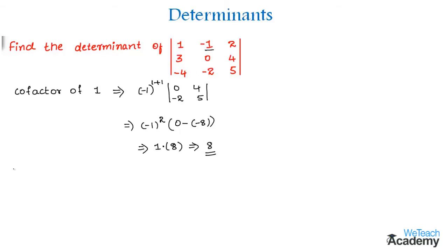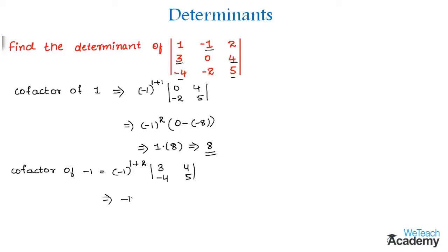The cofactor of element -1 is (-1)^(1+2) into the minor, obtained by deleting the first row and second column, giving the determinant of [3, 4; -4, 5]. That gives (-1)^3 into (15 - (-16)), which is -1 into 31, so the cofactor of element -1 is -31.